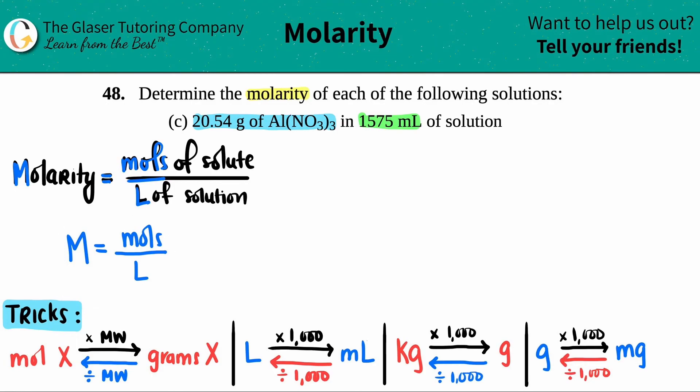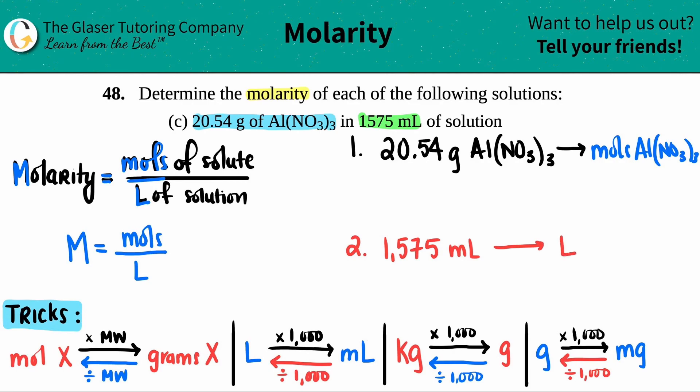So I have to do some conversions before I use this formula. It doesn't matter which conversion you do first. The first thing I'm going to do is take the 20.54 grams of aluminum nitrate and I need to convert to moles of aluminum nitrate Al(NO3)3 because then I would have the mole value. The second thing that I have to do is I have to convert 1575 milliliters into liters.